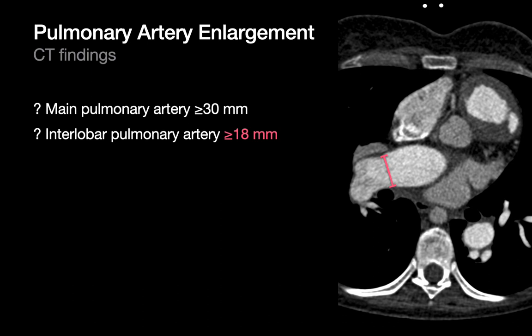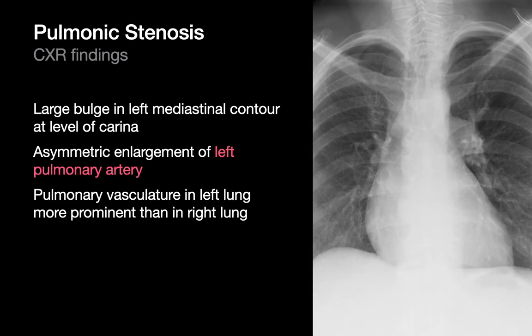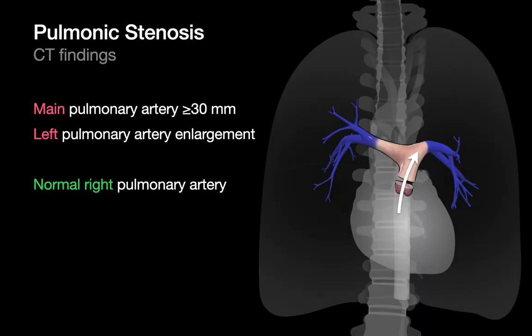Asymmetric left pulmonary arterial enlargement can sometimes be seen on chest x-ray and CT of patients with long-standing pulmonary stenosis. Folks believe that pulmonary stenosis causes a high-velocity jet of blood across the pulmonary valve that is preferentially directed towards the left pulmonary artery, which predisposes to asymmetric left pulmonary arterial enlargement.